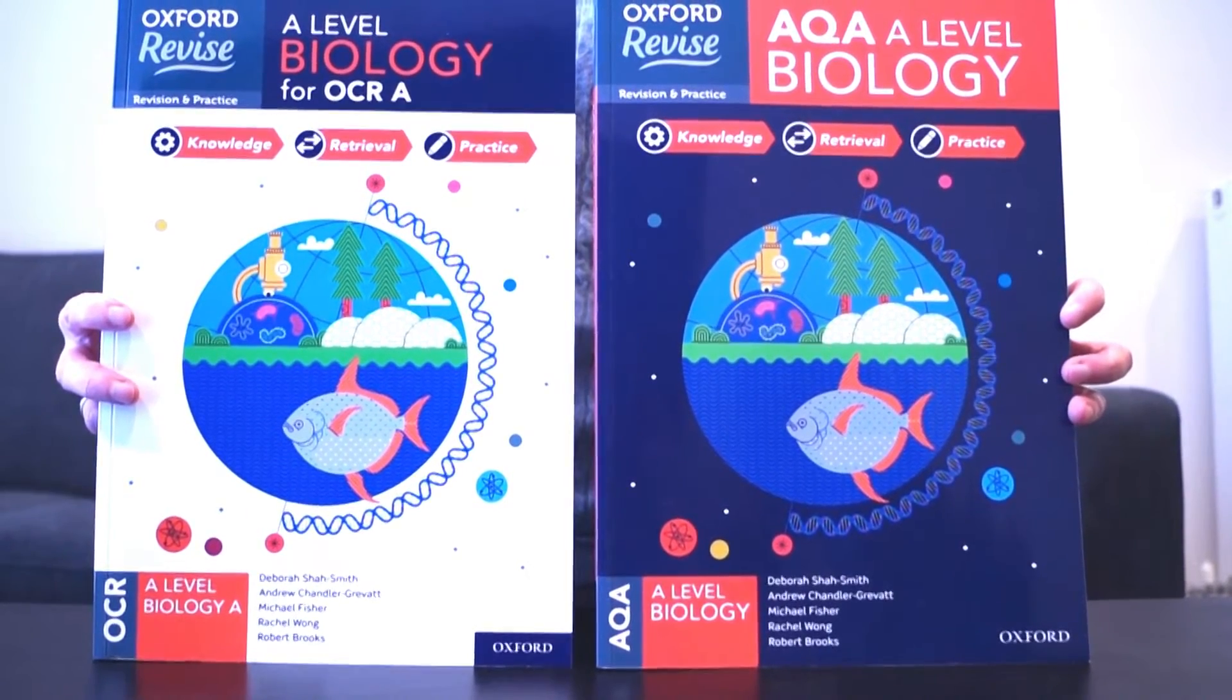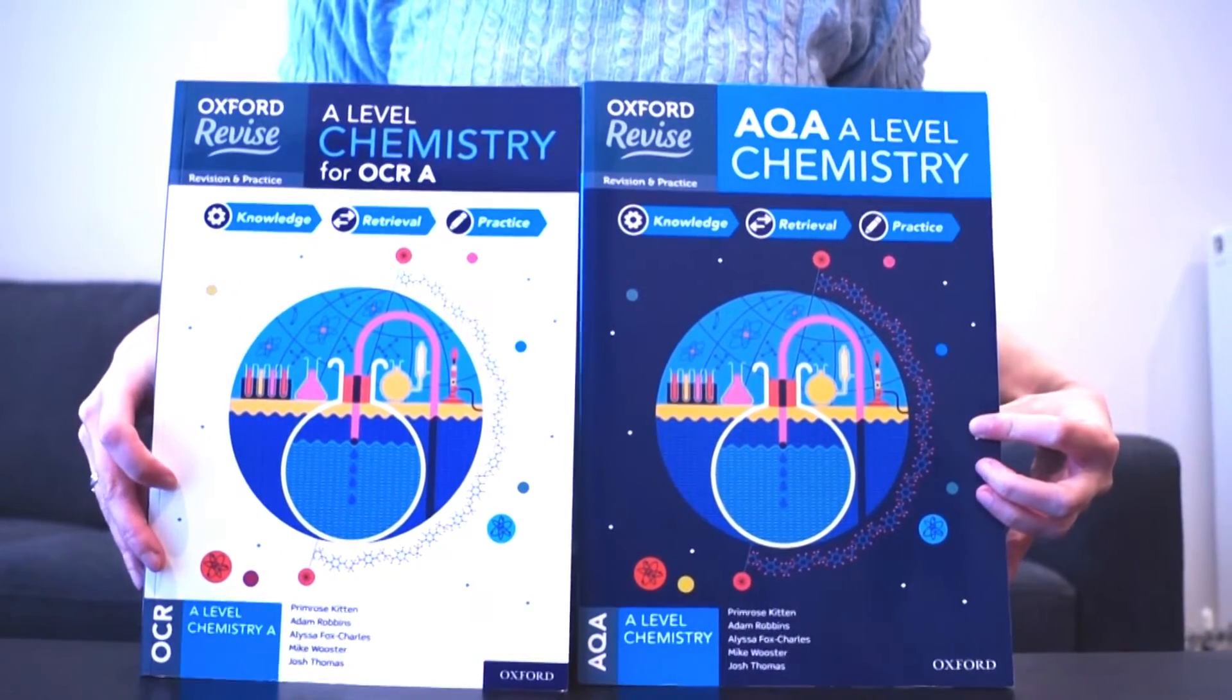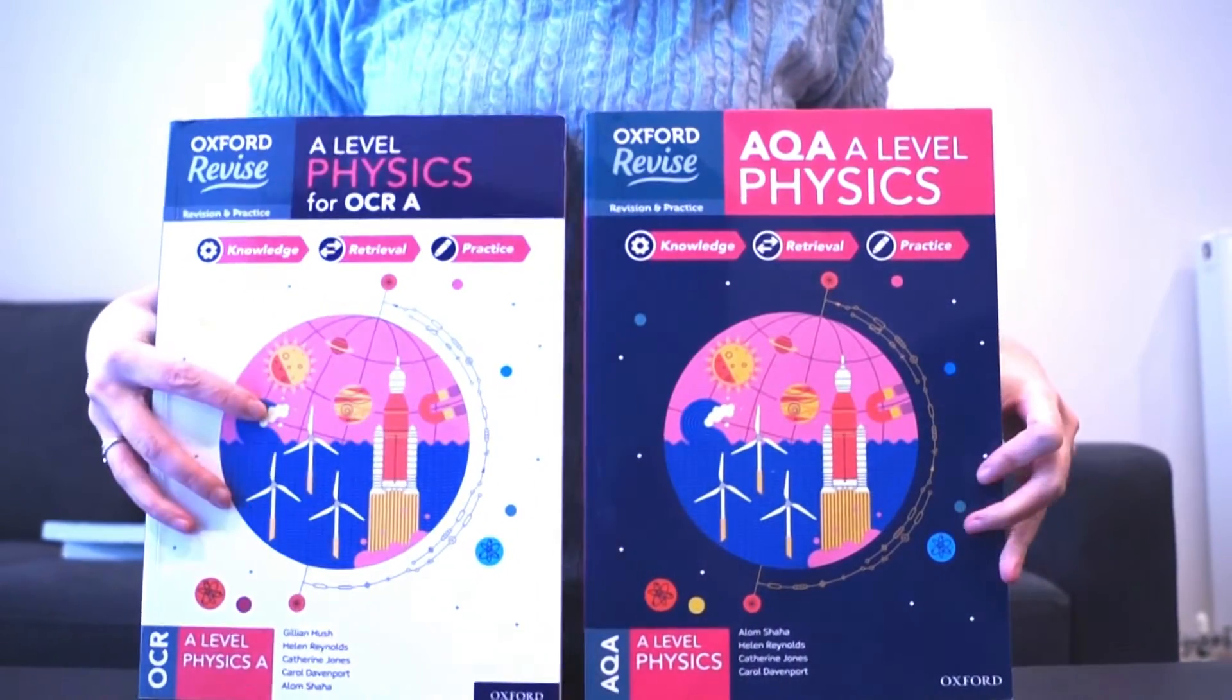To find these books in the Oxford Revise series, then check out the Oxford University Press website, Amazon or any of the major bookstores. I'll put the links down below in the description to check them out.